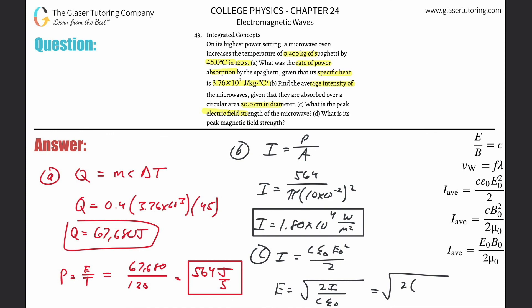We're going to solve for that electric field. So that's going to be 2I all over C times the permittivity of free space. This is the square root of 2 times that intensity of 1.8 times 10 to the fourth, divided by speed of light, which is 3 times 10 to the 8, multiplied by the permittivity of free space, which is 8.85 times 10 to the minus 12. And we get a value that the electric field is going to be 3.68 times 10 to the third volts per meter.